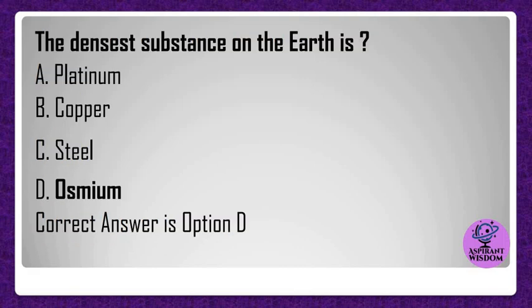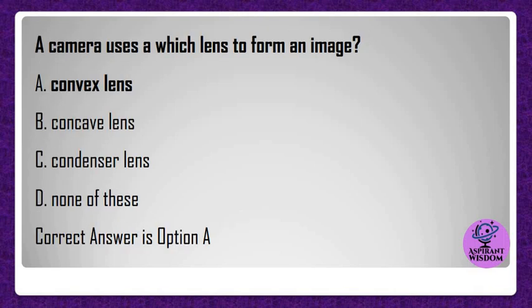The densest substance on the earth is? A) Platinum, B) Copper, C) Steel, D) Osmium. Correct answer is option D.